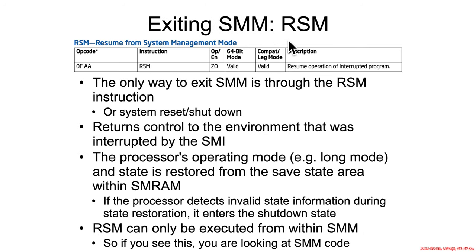Exiting out of SMM is done via the RSM (resume) assembly instruction. This is the only way to normally exit SMM, other than restarting or shutting down the computer. RSM is responsible for reading back the contents of save state stored in SMRAM and restoring them to the relevant registers. If anything about the state being restored to registers is invalid, the system will just straight up shut down. Additionally, RSM can only be executed from within system management mode — if you try to run it from anywhere else, it will cause an invalid opcode exception.